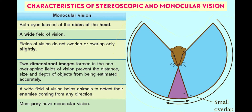Meanwhile, animals with monocular vision have a wide field of vision, but the fields of vision do not overlap, or overlap only slightly — as you can see here in the purple region. Two-dimensional images formed in the non-overlapping fields of vision prevent the animals from estimating the distance, size, and depth of objects accurately.